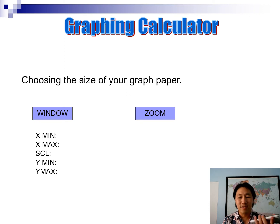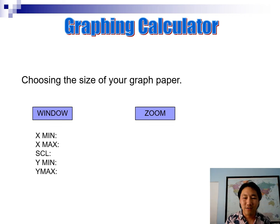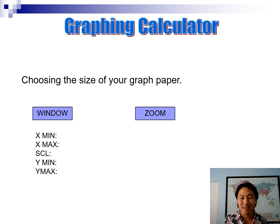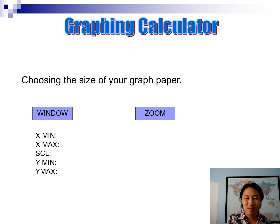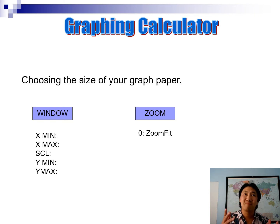Another way to adjust the view is the Zoom button, which zooms in and out on the graph. If your graph is so far out of the picture that you just see a blank page, you can use Zoom Fit and the calculator will try to fit your graph into the screen automatically. Those are the two main ways to change the window.